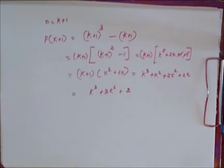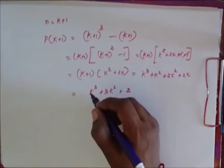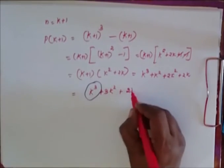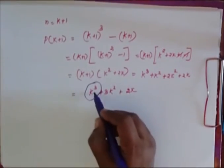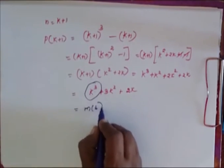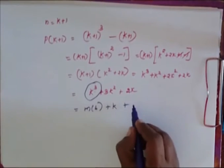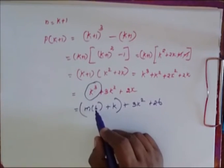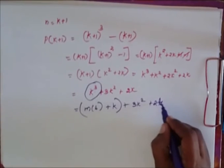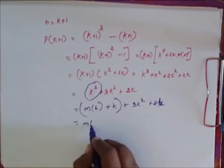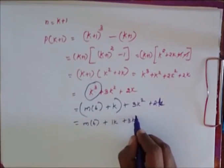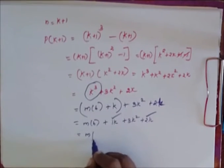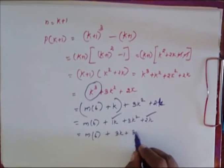Now, from the earlier inductive hypothesis, I have the value of K cubed. I substitute that value here. So I get: some multiple of 6 plus K, plus 3K squared plus 2K. This is the value of K cubed substituted as some multiple of 6 plus K. Combining the K terms, I get some multiple of 6 plus 3K plus 3K squared.